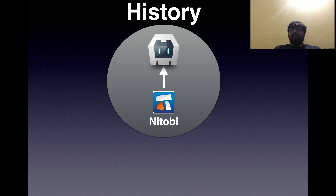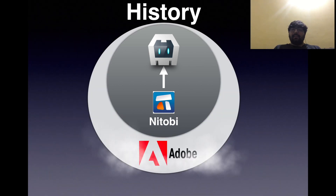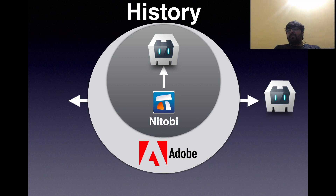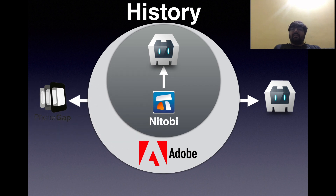Nitobi wanted to maintain Cordova as an open source product, but Nitobi was soon purchased by Adobe. Adobe said they would help maintain Cordova as open source, but since they had purchased Nitobi they also had rights on the code. So Adobe did two things: they started maintaining Cordova under Apache's license, and they created their own product wrapped around Cordova — they named it PhoneGap.